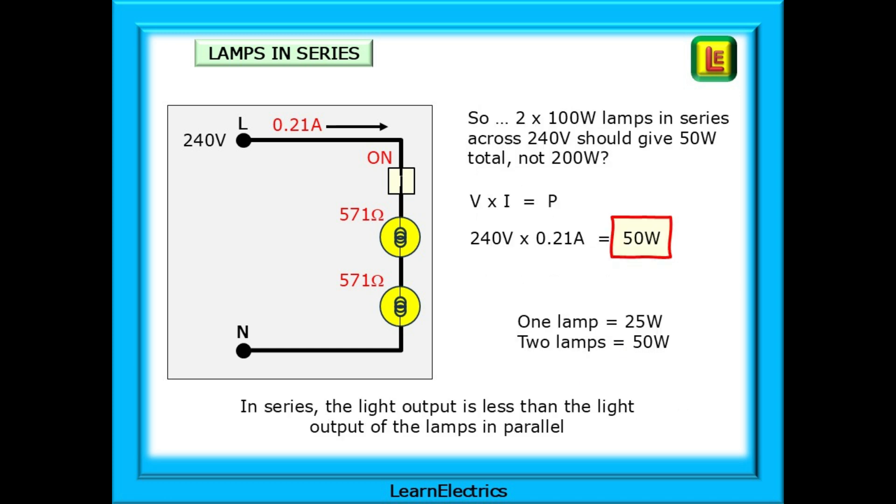Let's keep the same circuit but calculate the lamp output for the two lamps together. If our calculations are correct, we should have a total output of 2 times 25 watts or 50 watts. V times I equals P. So 240 volts times 0.21 amps is 50 watts. One lamp is 25 watts and two lamps is 50 watts. In series, the light output is less than the light output of the lamps in parallel.